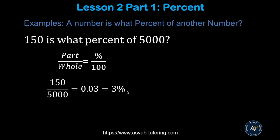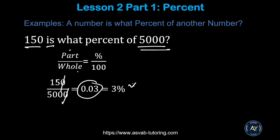Another example: 150 is what percent of 500. 'Is' means part (150), 'of' means whole (500). So 150 over 500 reduces — simplify to get 0.30, then convert from decimal to percent to get 30 percent.